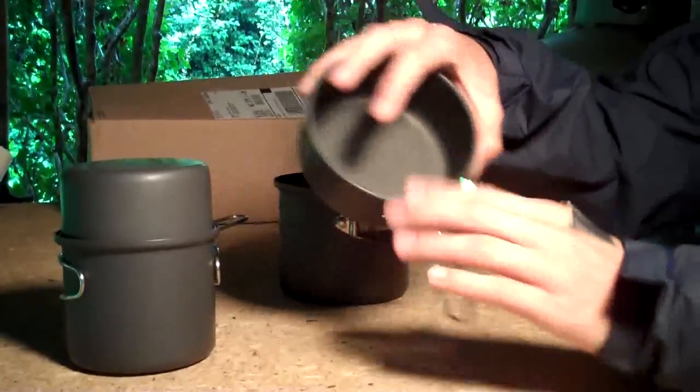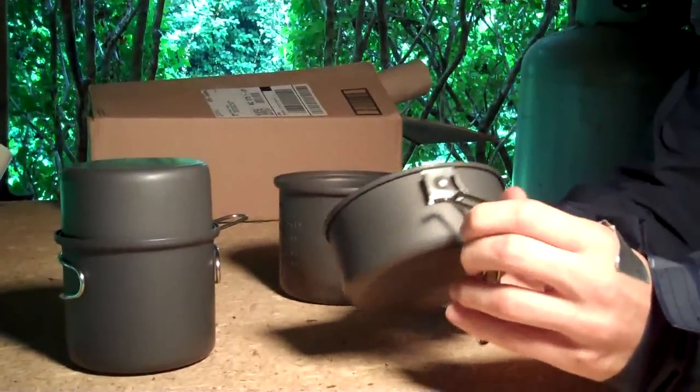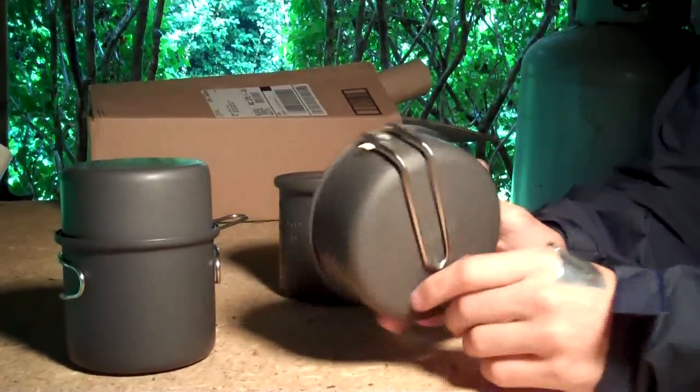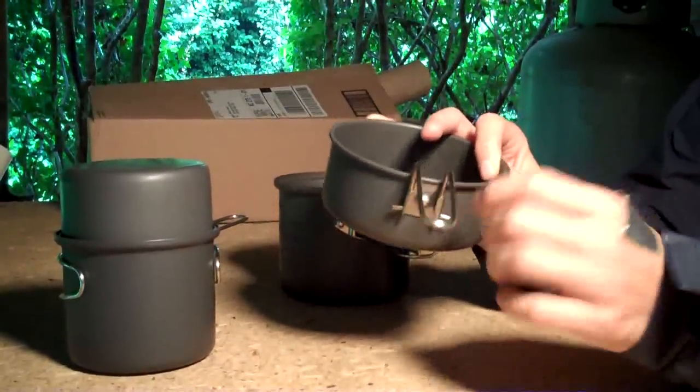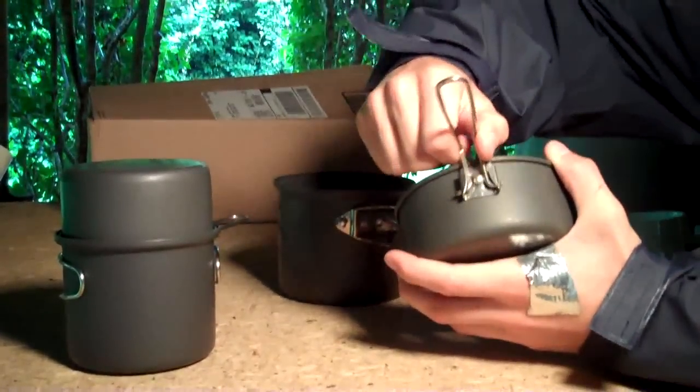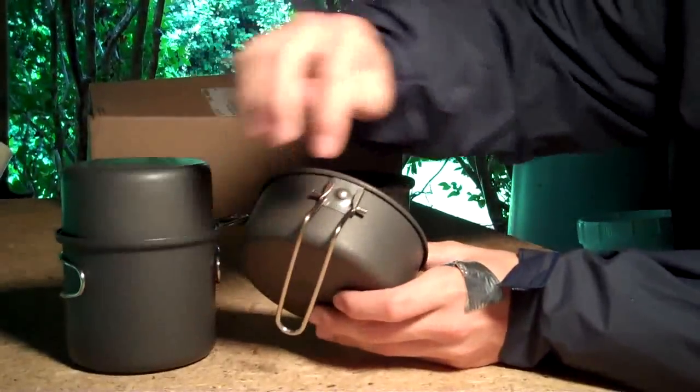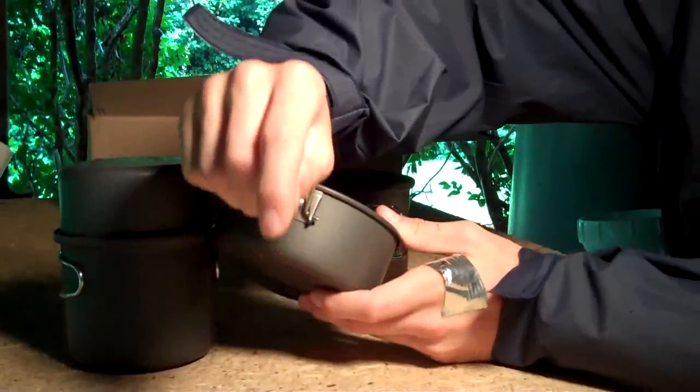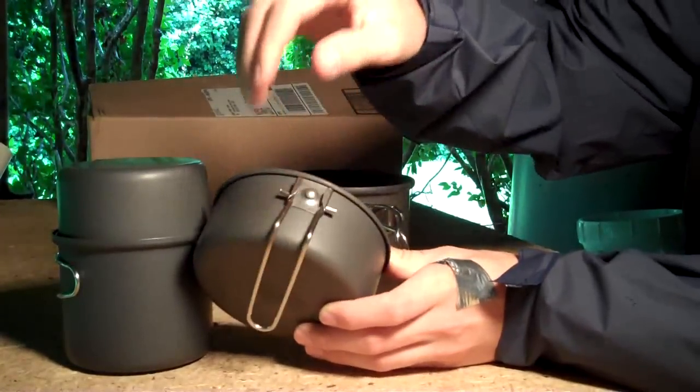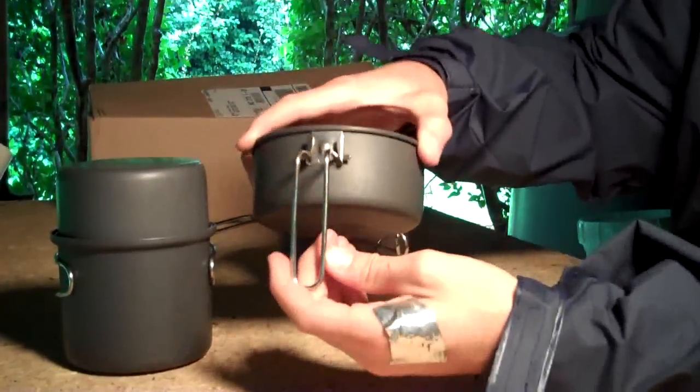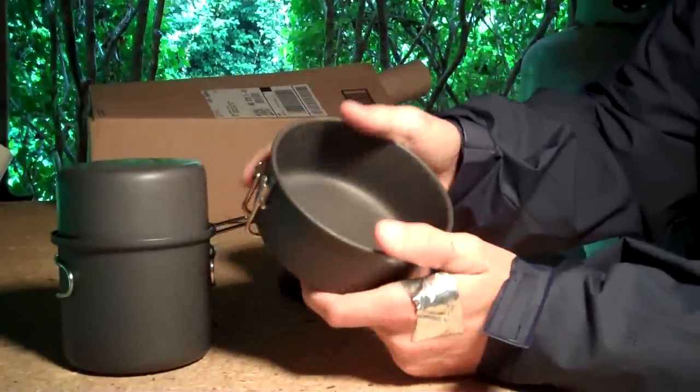Another thing is the handles for the pot lids are good quality. As you can see, what they do is they just pop in to those little slots. And then they lock in with the piece right here. And to get them off, you just squeeze it. And it goes back between those little slots. And that locks it in. And then squeeze it, and it kind of self closes. As you can see, it actually had a little bit of retention there. So that's good.